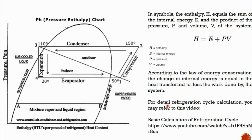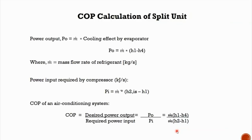If you want to know the details of the refrigeration or cooling cycle calculation, you may refer to the video link provided. This shows the basic calculation of the refrigeration or cooling cycle. The reason for showing you the pH diagram is so that you know how to calculate the COP of a split unit air conditioner.